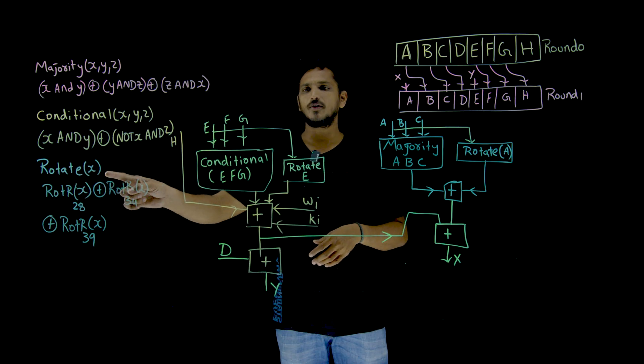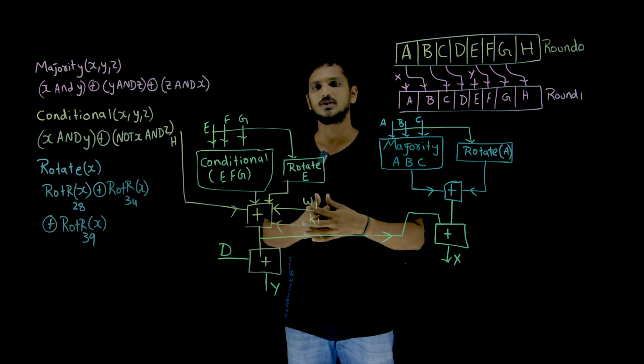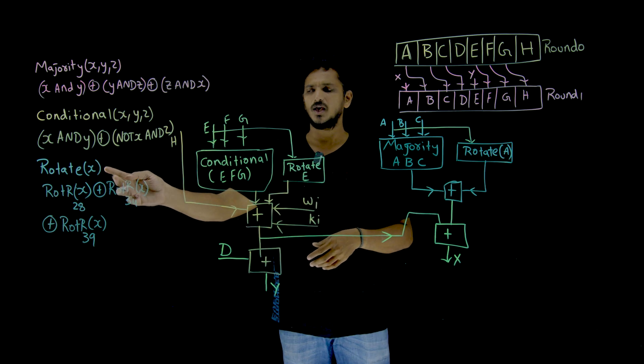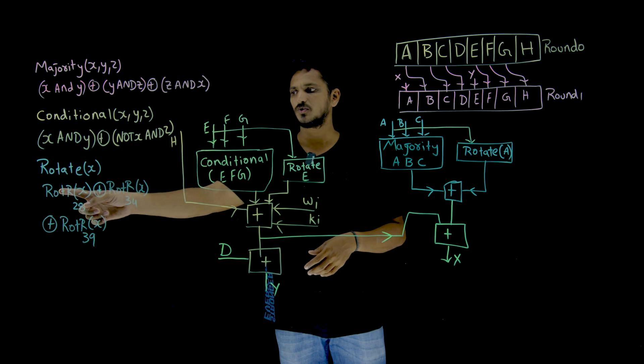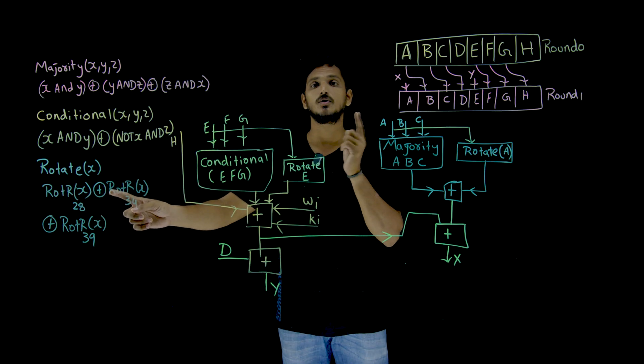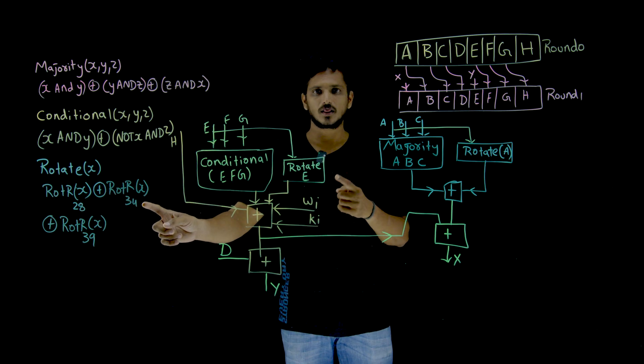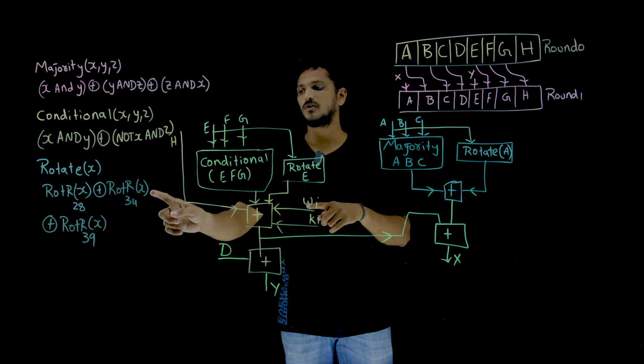And the final one, rotate of X means, if you want to take rotate of A, rotate of E, how these functions work is: rotate of X means X is 64 bit, it is rotated 28, right rotation, circular right rotation 28 bits, XOR, circular right rotation 34 bits of X.